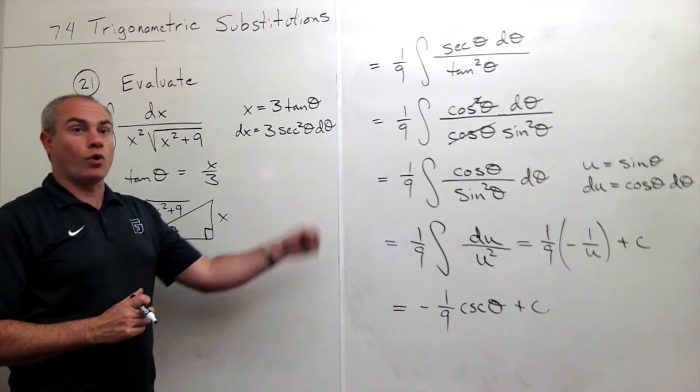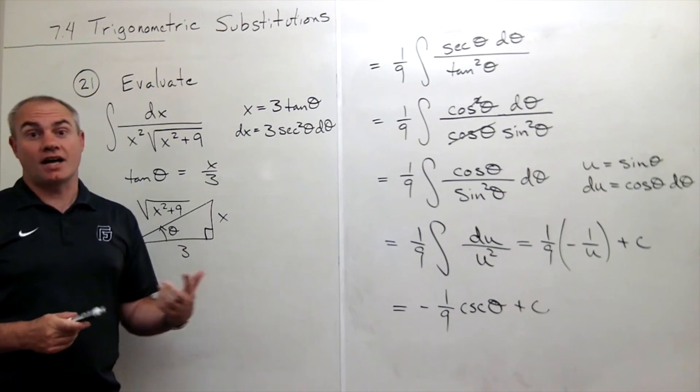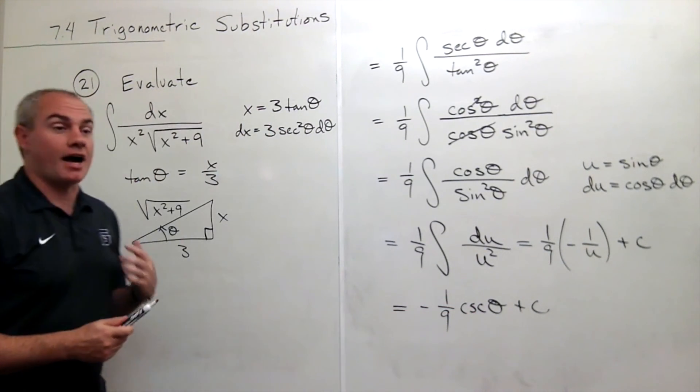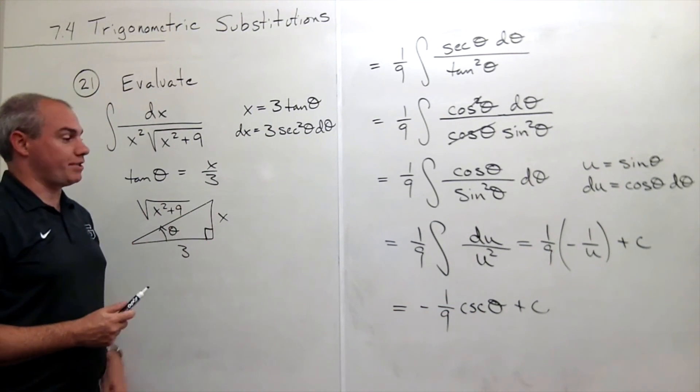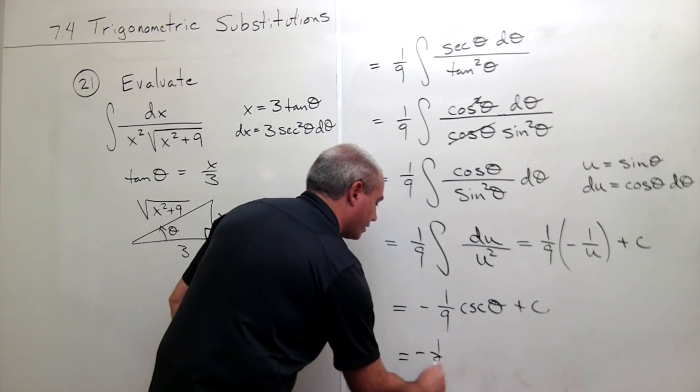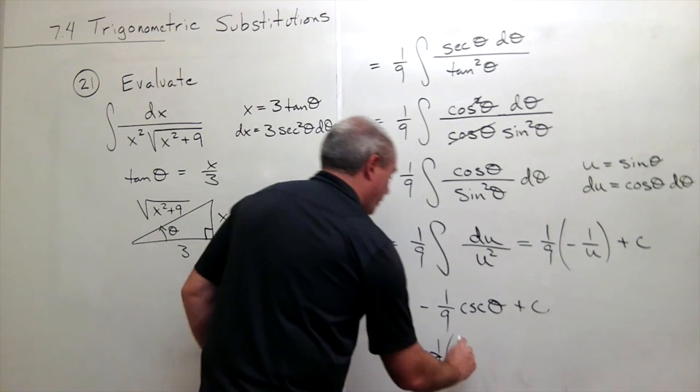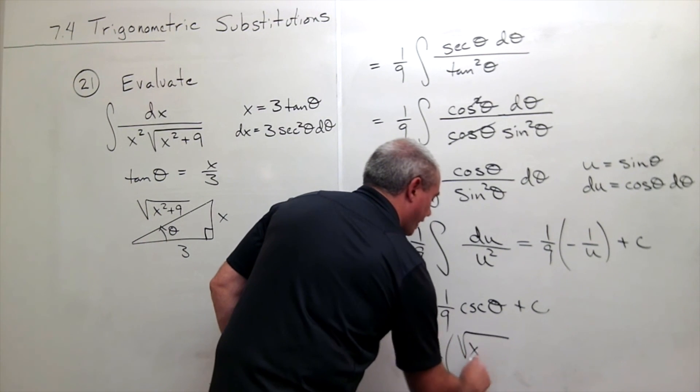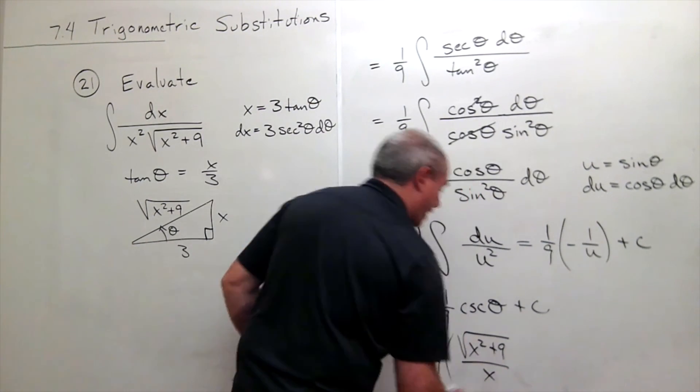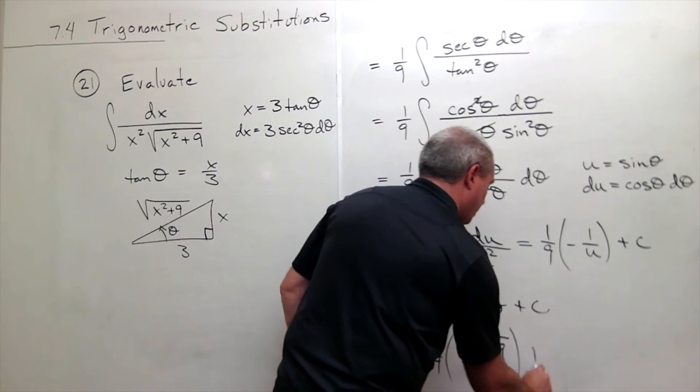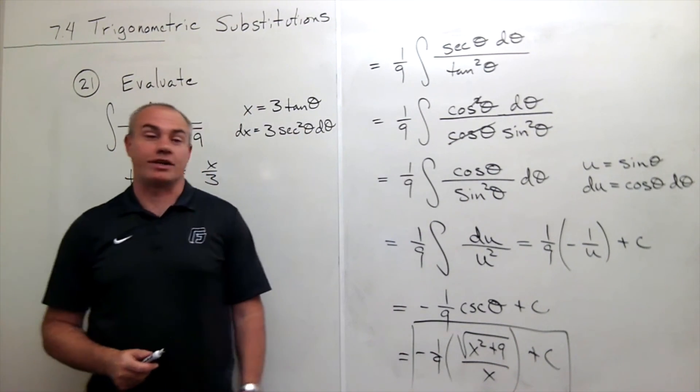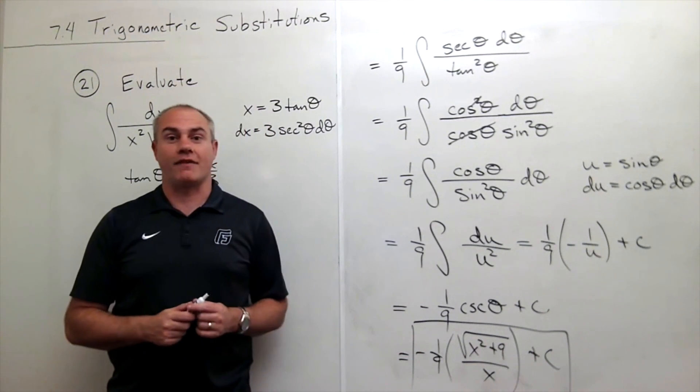Cosecant is the same as 1 over sine. Sine is opposite over hypotenuse. So cosecant is hypotenuse over opposite. And so we can rewrite this as minus 1 9th hypotenuse, which is square root of x squared plus 9 over opposite, which is x, plus c. And now we have this thing written in terms of x and we have our final answer.